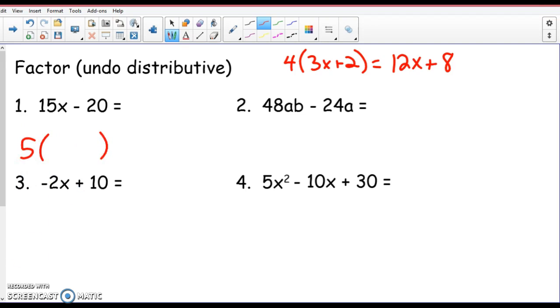What's the greatest common factor? 5. So 5 is going to come out front and I'm going to leave myself a space. Now I think you guys are capable of doing this in your head. And we just said to undo distributing, which is multiplying, we're actually going to divide. So look what I'm going to do. I'm either saying this in my head or I'm writing it down. What is 15x divided by 5, everyone? 3x. And what is negative 20 divided by 5? Negative 4 or minus 4.